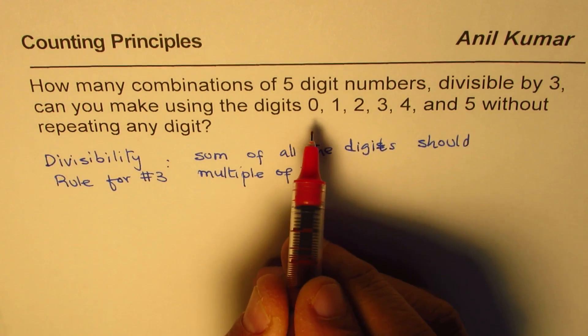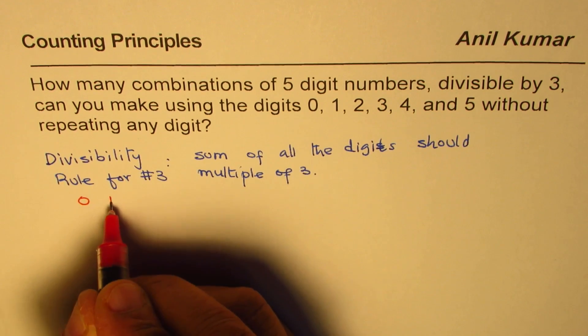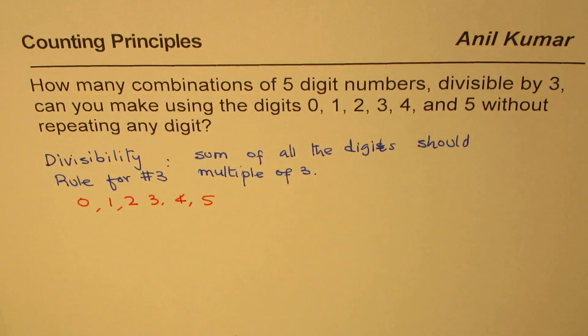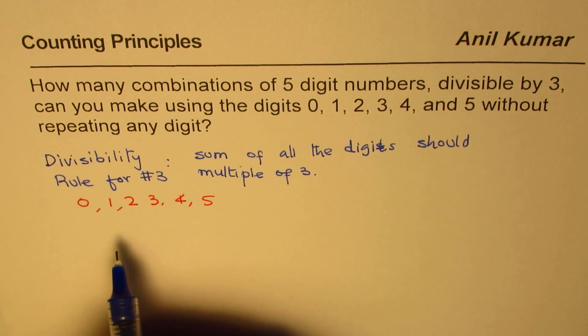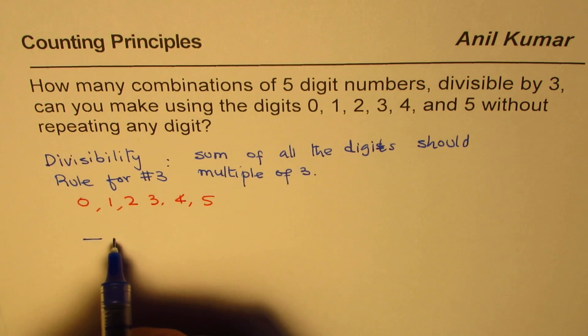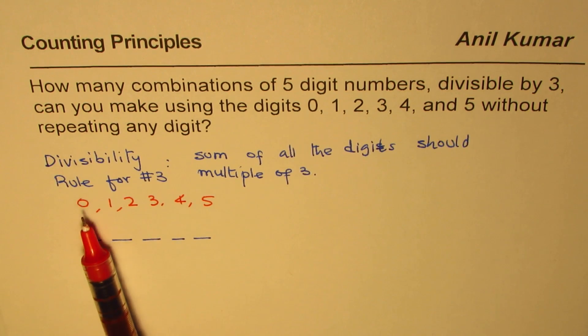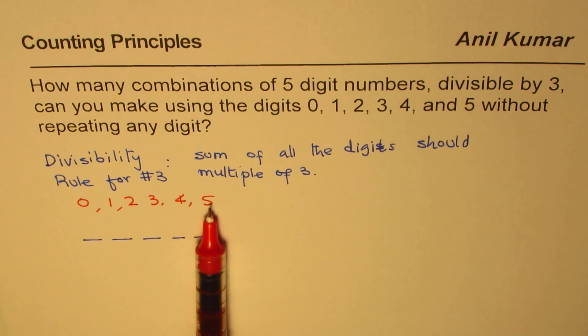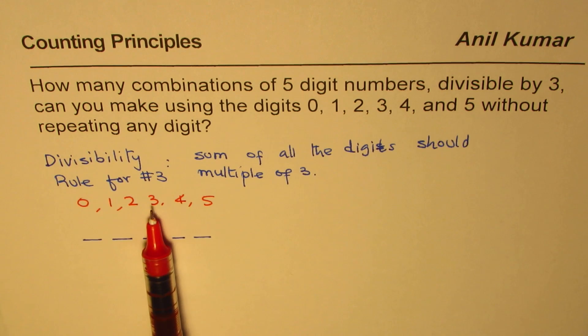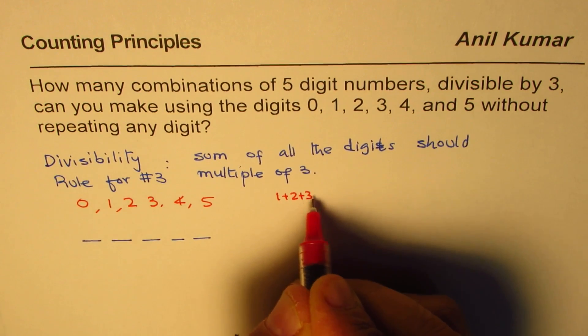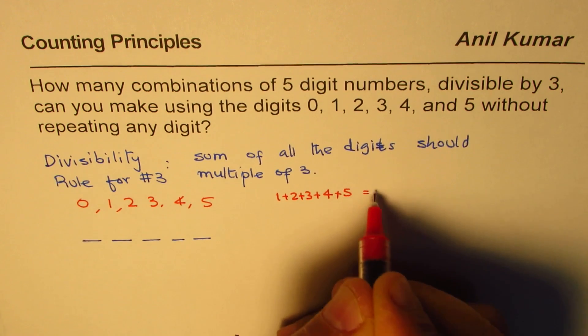What we are given here is a set of six numbers: 0, 1, 2, 3, 4, and 5. These are six numbers. However, we have to use only five of them. So, these are the five positions to be filled in to form a five-digit number. Now, if I add these numbers, what do I get? 0 plus 1 plus 2 plus 3 plus 4 plus 5 is how much? 1 plus 2 is 3, 3 plus 3 is 6, 6 plus 4 is 10, plus 5 is 15.